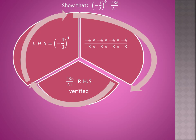First, we take left hand side is equal to minus 4 upon 3 to the power 4. It means minus 4 is 4 times and 3 is also 4 times with minus sign. Now, we multiply the terms. We get 256 upon 81 which is the right hand side. Left hand side is equal to right hand side verified.